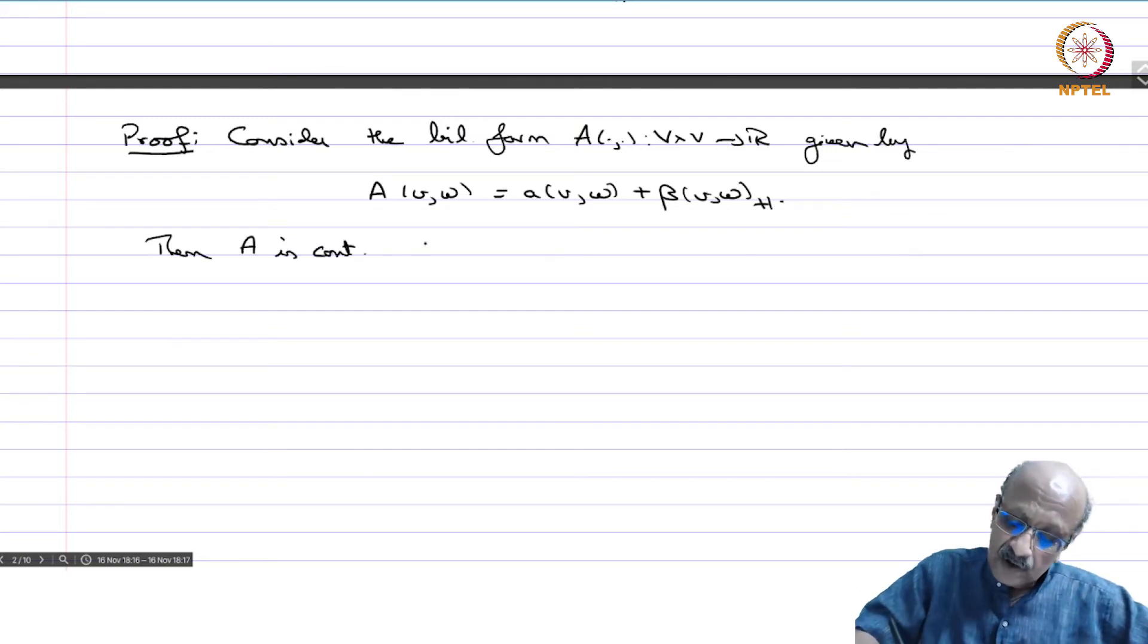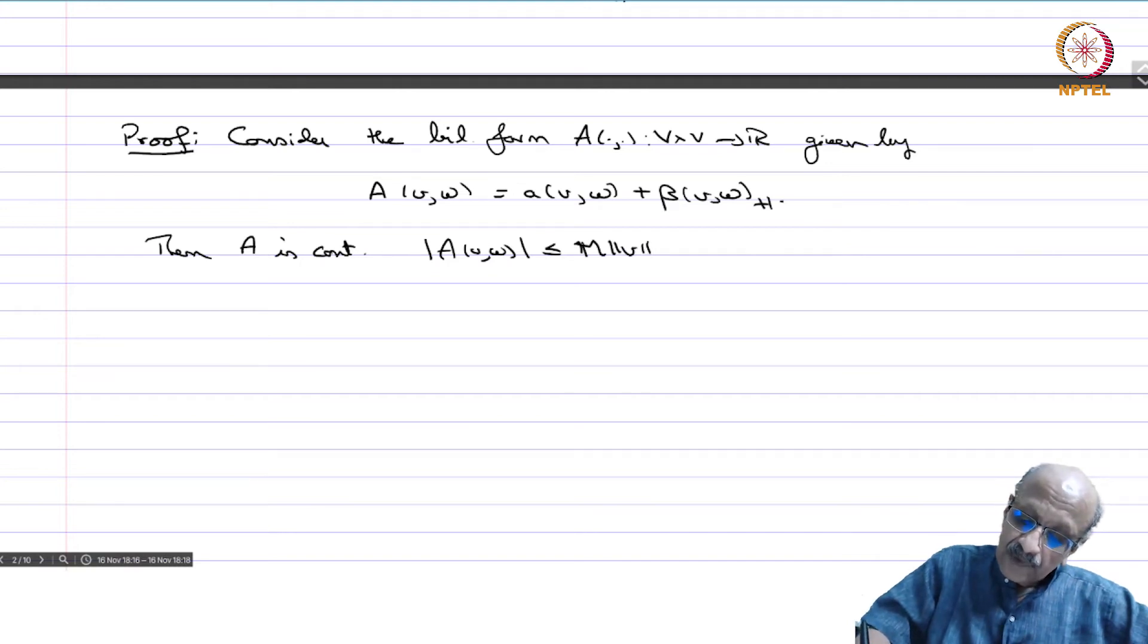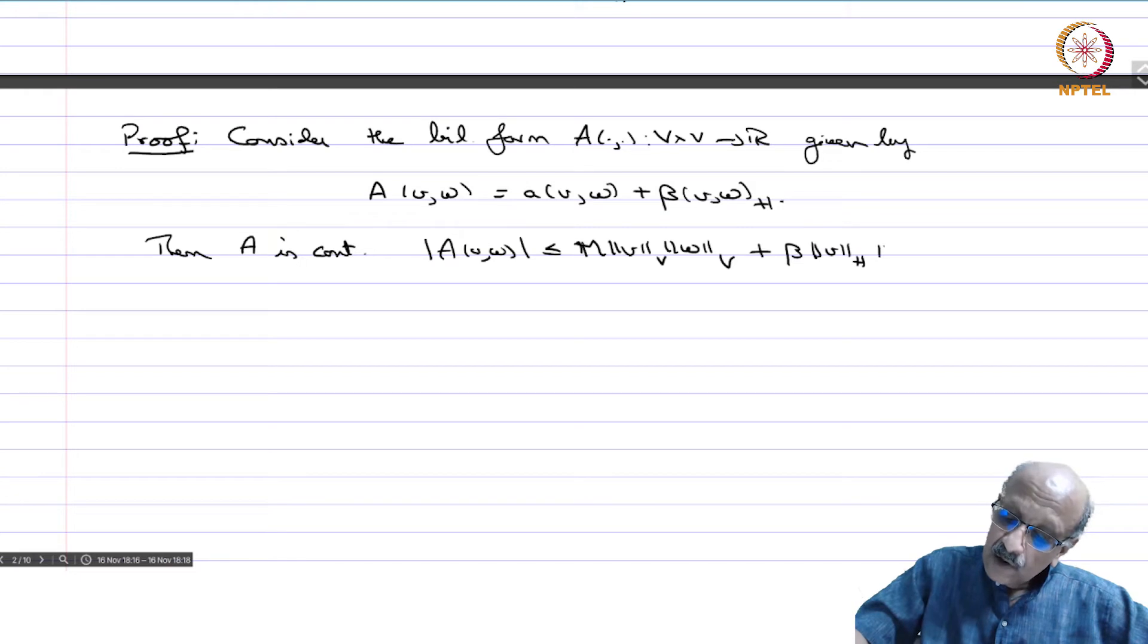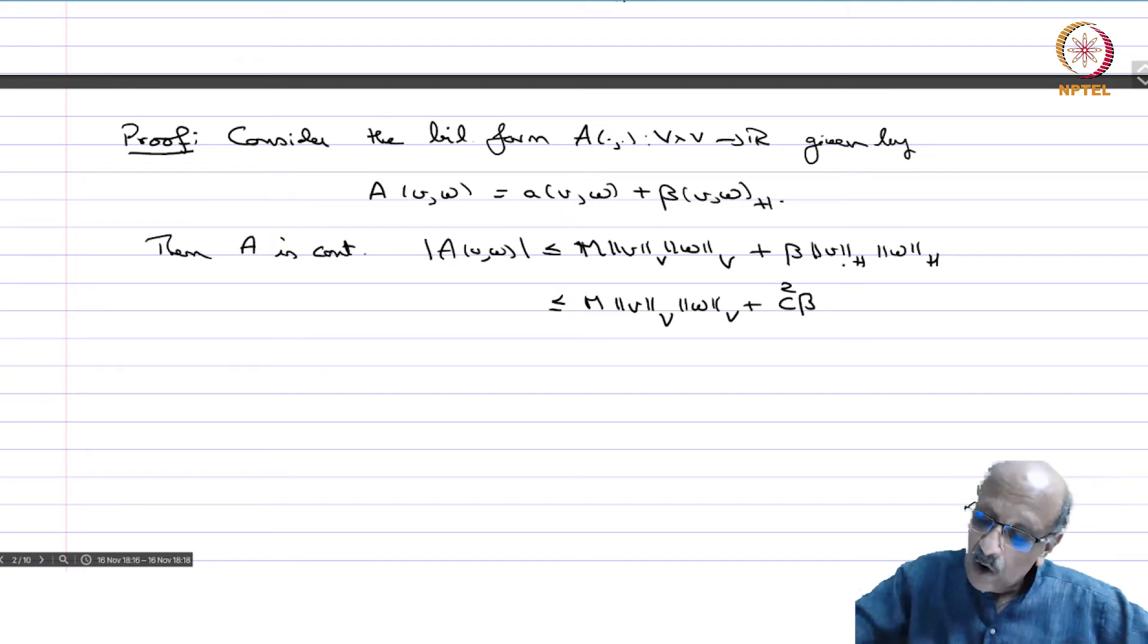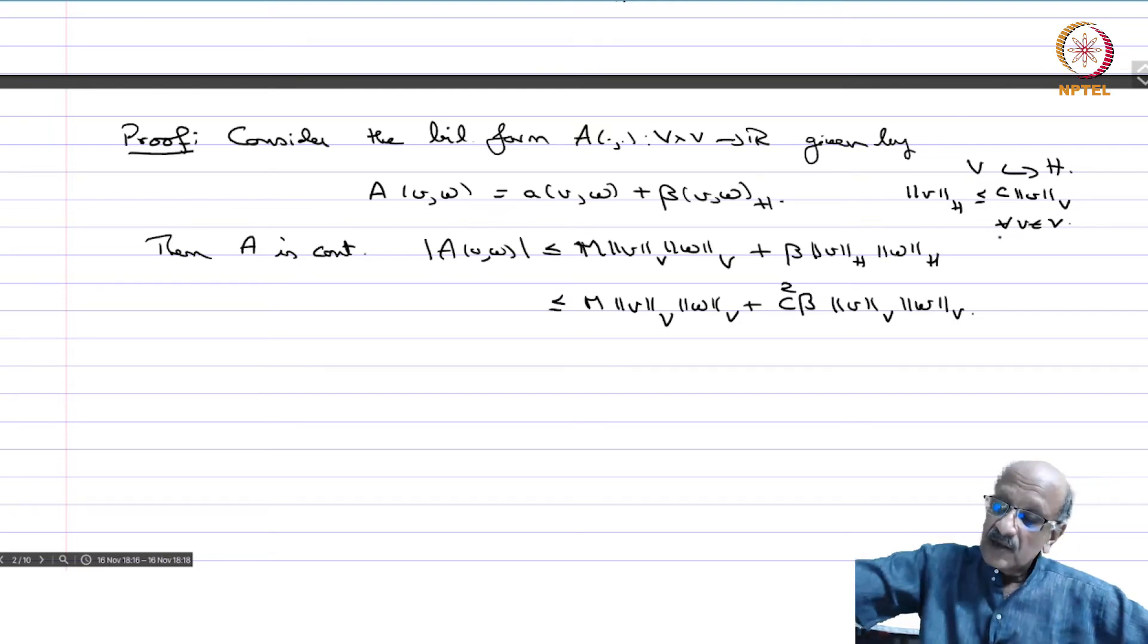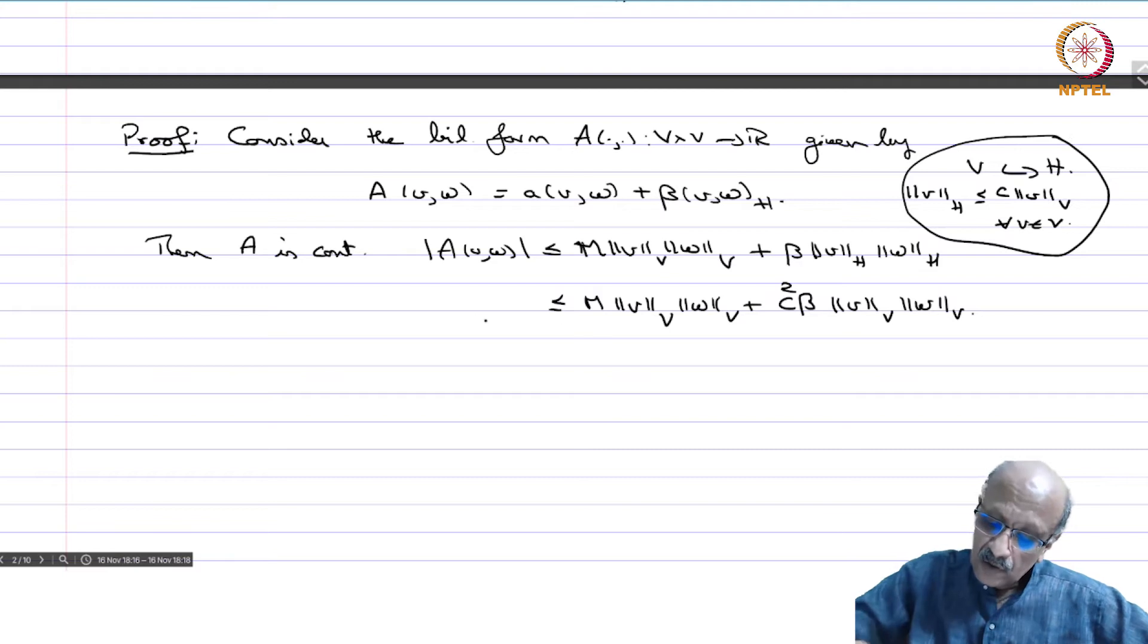Then A is continuous. |A(v,w)| ≤ M||v||_V||w||_V + β||v||_H||w||_H ≤ M||v||_V||w||_V + C²β||v||_V||w||_V, because ||v||_H ≤ C||v||_V for every v in V—this is because V is continuously embedded in H. So it's clearly continuous.